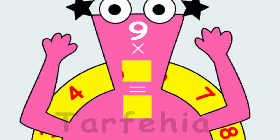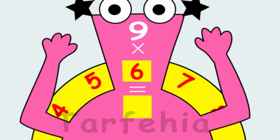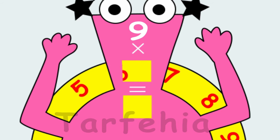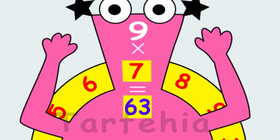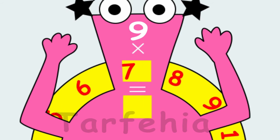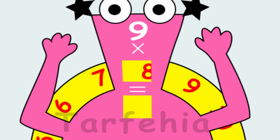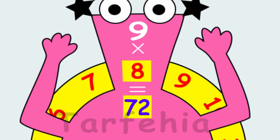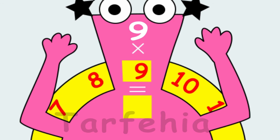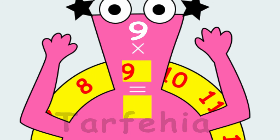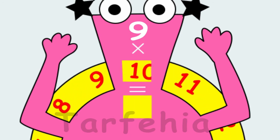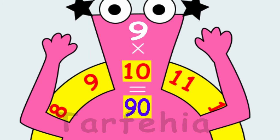9 times 6 equals 54. 9 times 7 equals 63. 9 times 8 equals 72. 9 times 9 equals 81. 9 times 10 equals 90.